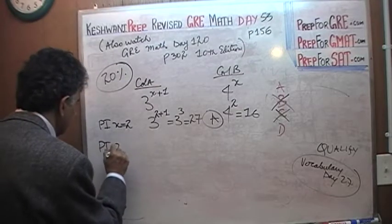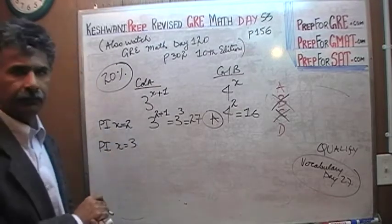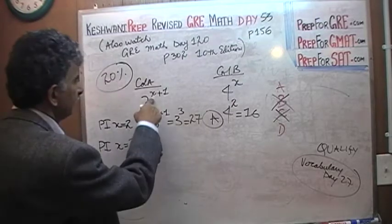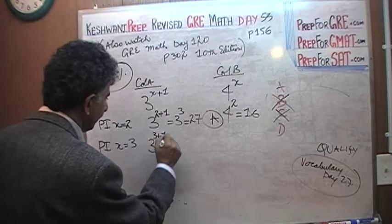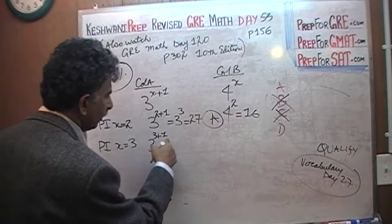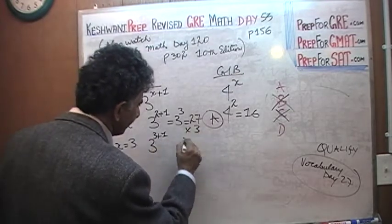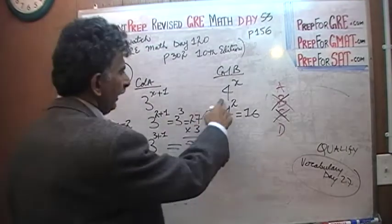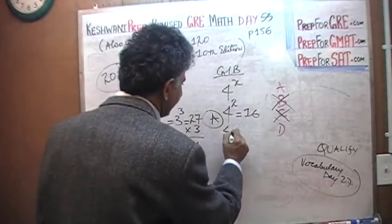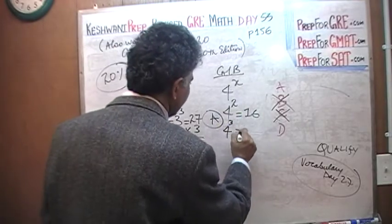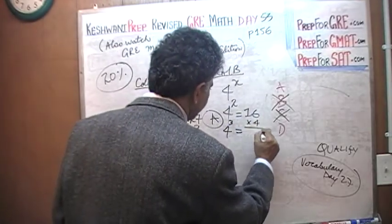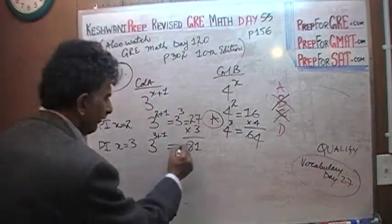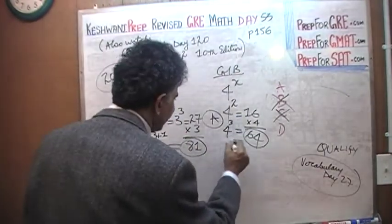Let's plug in X equals three. Then we have 3 raised to (3+1), which is 3 raised to 4 — simply three times the previous amount. And 4 raised to 3 is simply four times the previous amount. So now we have 81 versus 64 — the answer is still A.